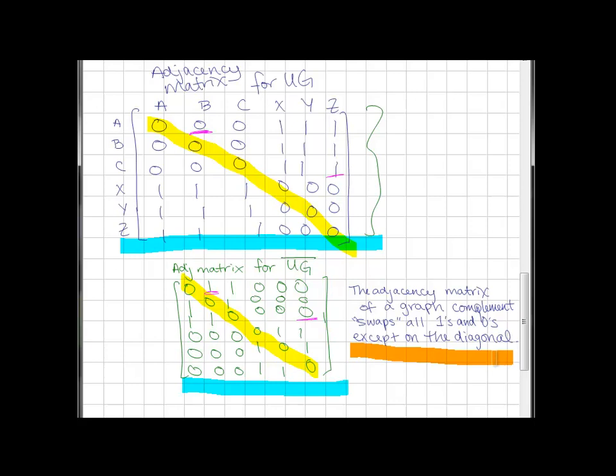And that should make sense, because we use these adjacency matrices to encode where graphs had edges or didn't, one meaning there is an edge, zero meaning there isn't between a pair. So now, we're just reversing that in the complement. Well, there was one before, now there won't be, so that would switch a one to a zero, and vice versa.